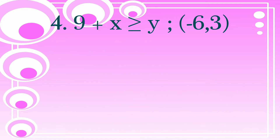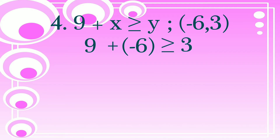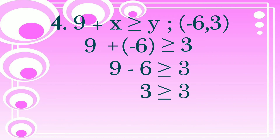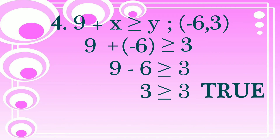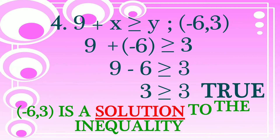Number 4: we have 9 plus x is greater than or equal to y, and our ordered pair is (negative 6, 3). We substitute into our variables: x is negative 6 and y is 3. So 9 plus negative 6, which is 9 minus 6, is greater than or equal to 3. That equals 3, so 3 is greater than or equal to 3 — that is true. So (negative 6, 3) is a solution of our inequality.